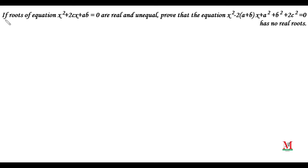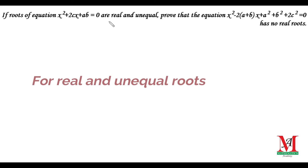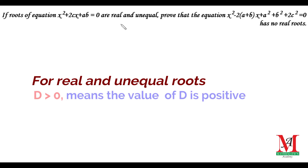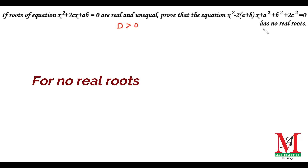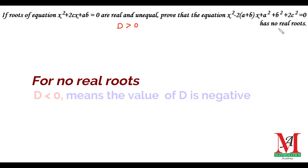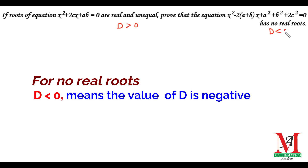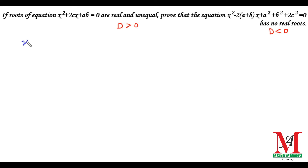Good morning from the Mathematics Academy. The question states that the roots of the equation are real and unequal, and we need to prove that a second equation has no real roots. As we know, if the roots are real and unequal, the discriminant D is greater than 0. To prove no real roots, we need to show D is less than 0.